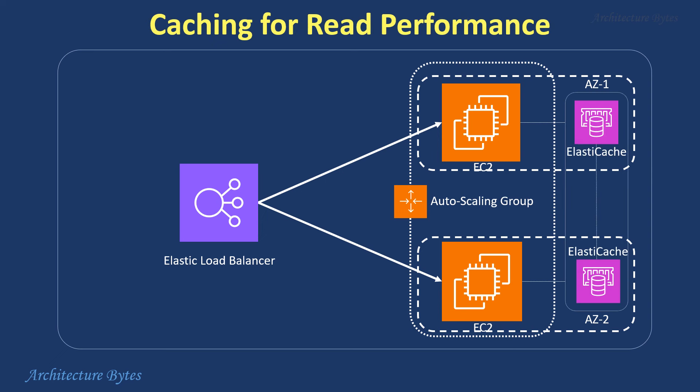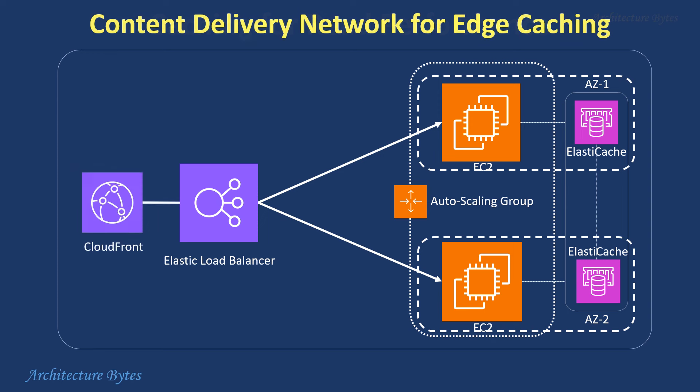Use Amazon ElastiCache to cache frequently accessed data, thereby improving data read performance. Utilize Amazon CloudFront, a content delivery network, to cache and deliver static and dynamic content from edge locations, thus reducing content delivery latency and improving user experience.